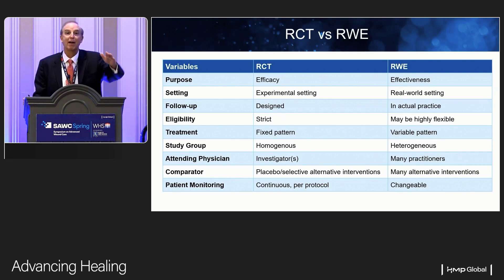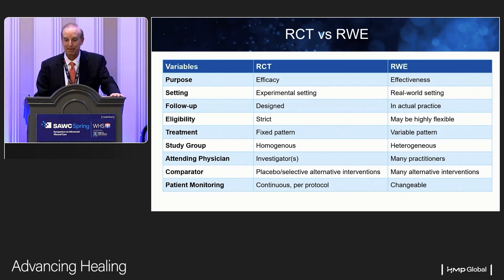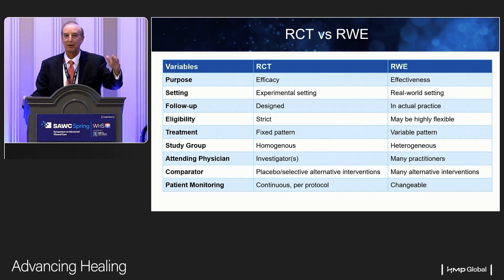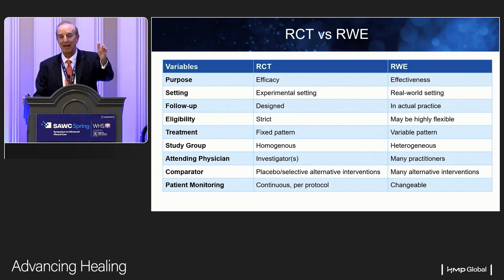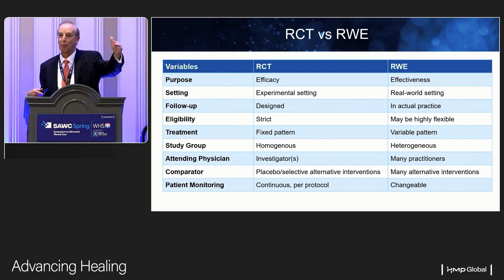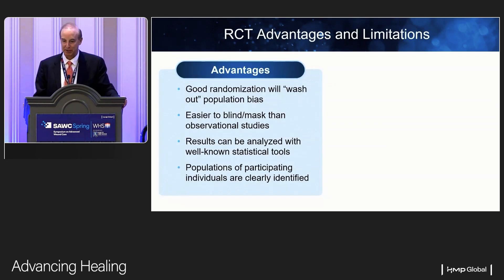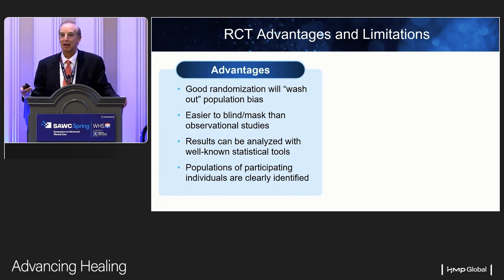Putting these into a chart: there are different types of evidence — efficacy versus effectiveness, experiment versus real-world setting. Eligibility in an RCT is very strict; you can't have patients with liver disease, renal disease, or low albumin. But in real life you can treat these patients in any way. You may follow patients in a trial every week, but in real life you may see them in three days and then three weeks later. The treating person in a trial is the investigator; in real life, it's the treating practitioner.